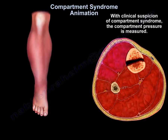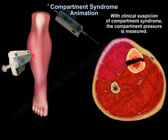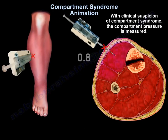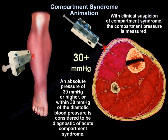With clinical suspicion of Compartment Syndrome, the compartment pressure is measured. An absolute pressure of 30 mmHg or higher, or within 30 mmHg of the diastolic blood pressure, is considered to be diagnostic of acute Compartment Syndrome.